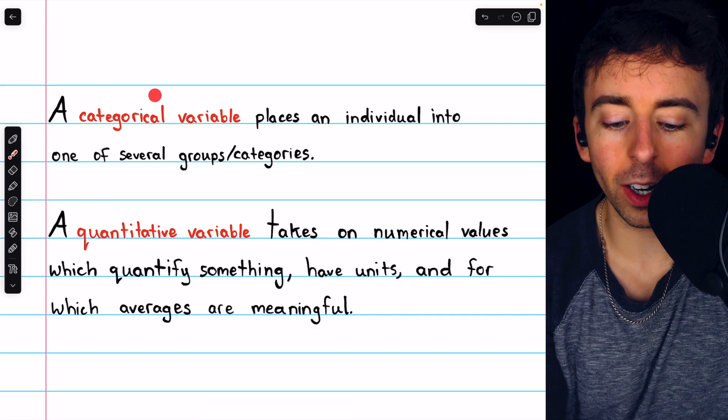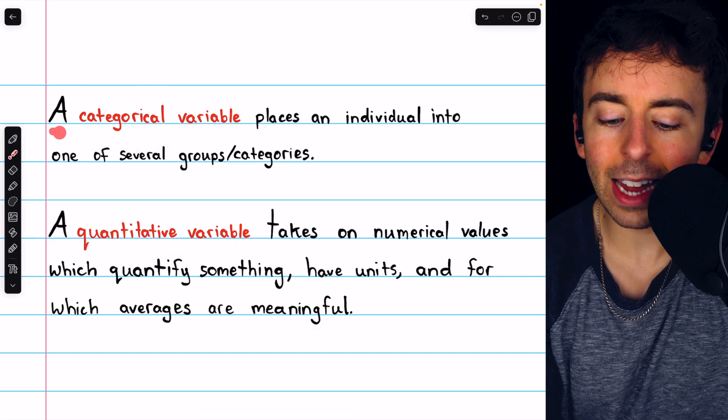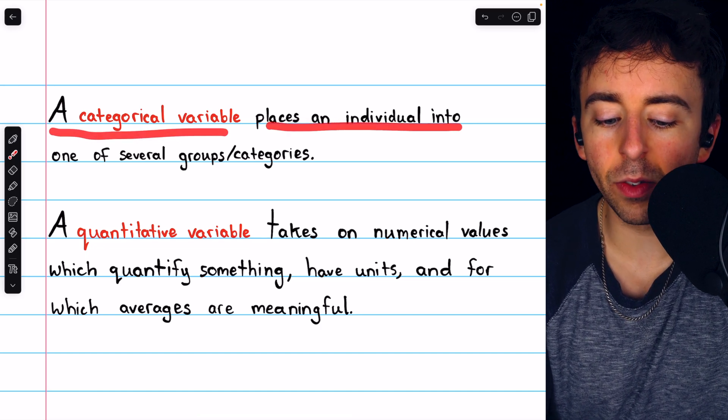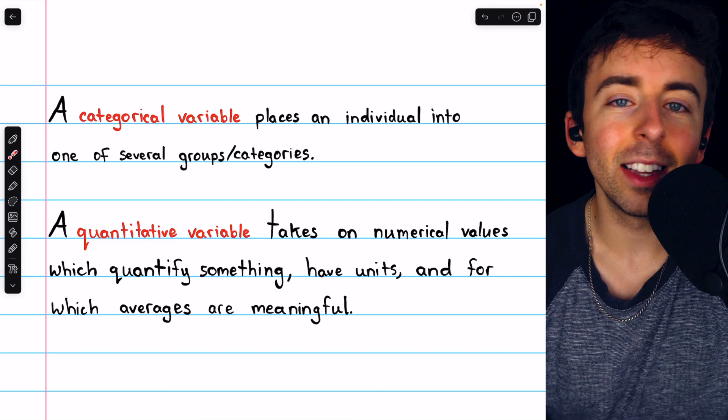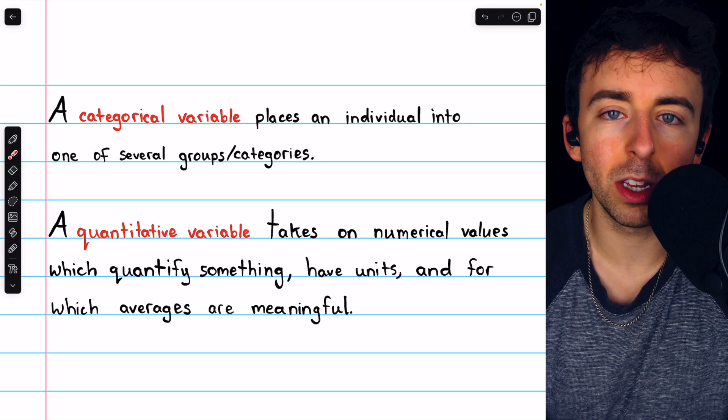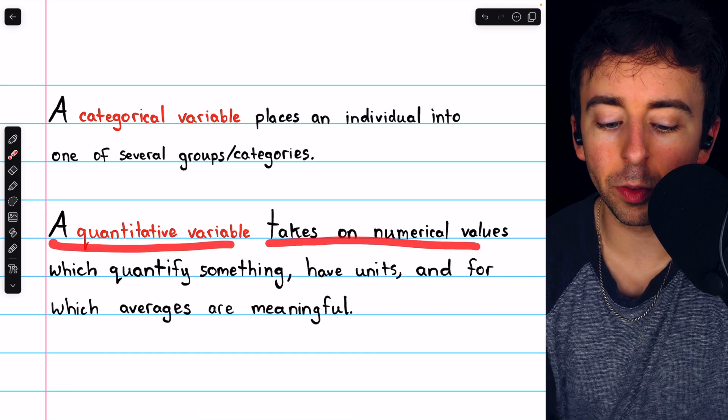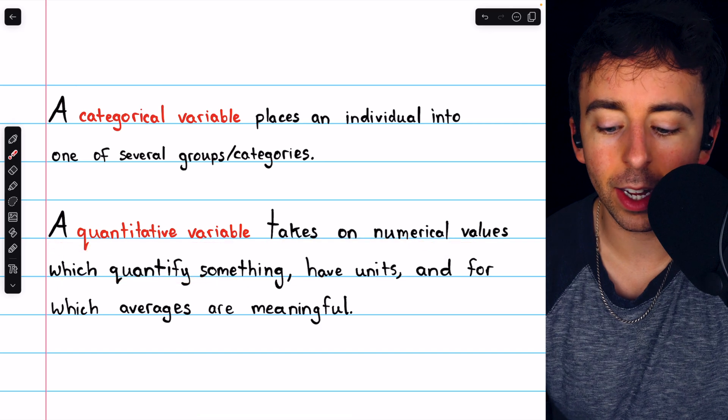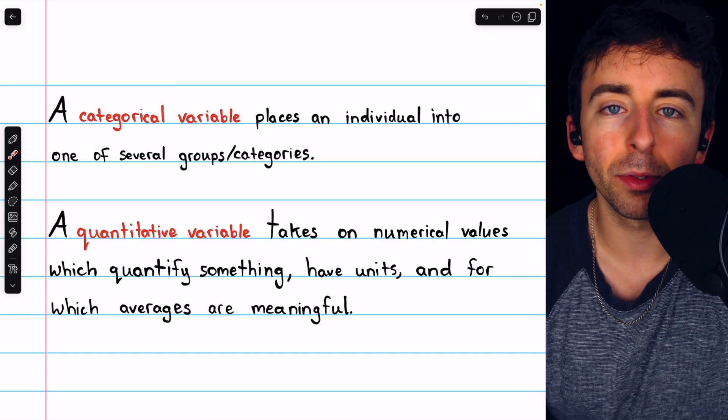The two main types of variables are categorical variables and quantitative variables. A categorical variable places an individual into one of several groups or categories. This could be the city that they live in, or it could be the color of a car, or it could be the breed of an animal. On the other hand, a quantitative variable takes on numerical values which quantify something. They have units, and taking averages of quantitative variables makes sense.